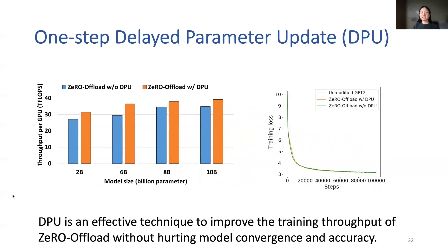The figure on the left shows training throughput with and without delayed parameter update for GPT-2 with the same training batch size. The figure on the right shows the training loss curve of unmodified GPT-2, Zero Offload without delayed parameter update, and Zero Offload with delayed parameter update. The results show that one-step delayed parameter update is an effective technique to improve training throughput without hurting model convergence or accuracy.